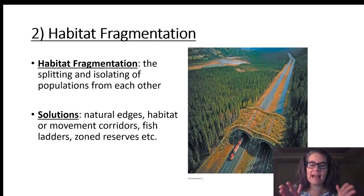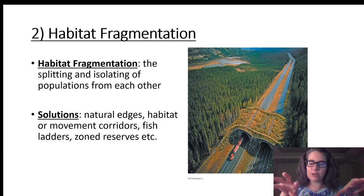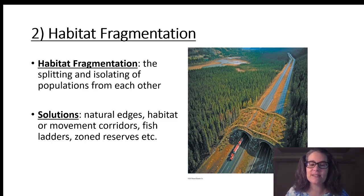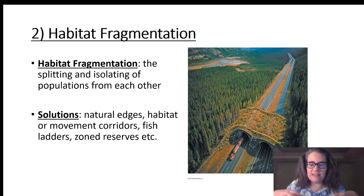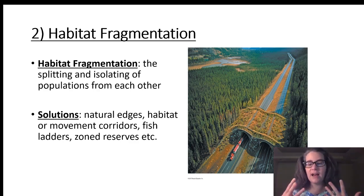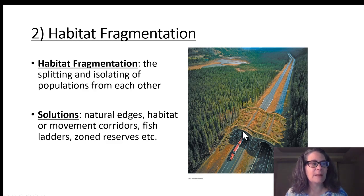When we think about splitting up and isolating populations, habitat fragmentation is a problem we see all over. When we build roads or dams, these things separate or fragment different groups of populations so that they cannot migrate, mate, find food, or find shelter. Some solutions include encouraging natural edges around fields — as was done in Europe — which allow organisms to have habitat and spaces. Instead of farming edge to edge, we leave a little natural border around different areas, creating spaces for foxes, rabbits, and other native species. Habitat or movement corridors, like the one shown in the picture here, provide ways for different organisms to move across these habitat fragmenters.